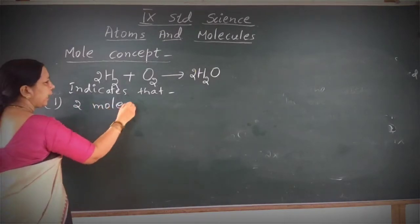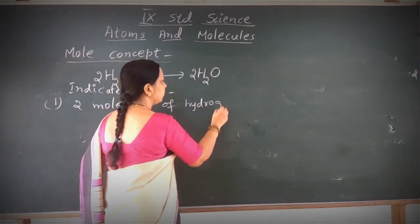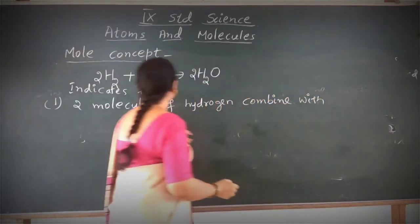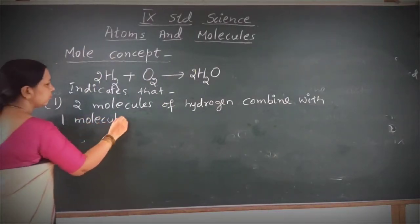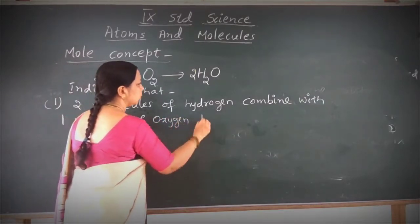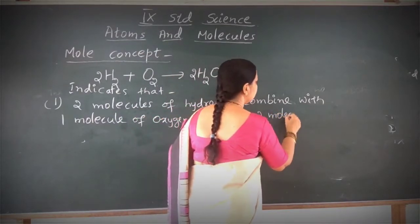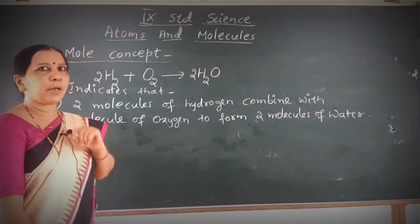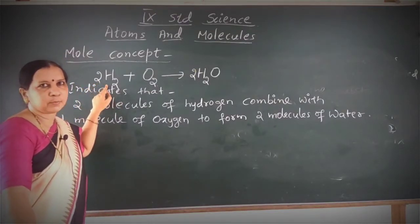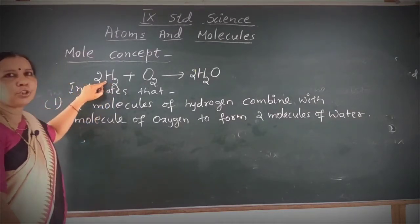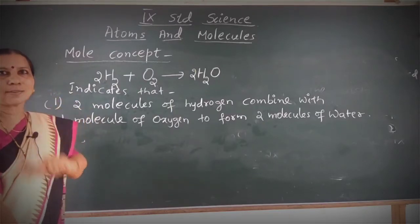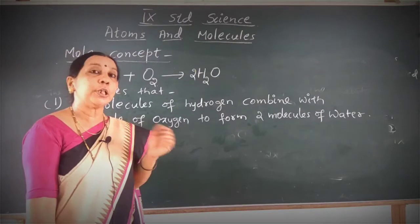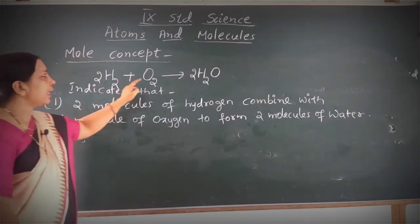Two molecules of hydrogen combined with one molecule of oxygen to form two molecules of water. This is hydrogen molecule. The atomic mass of hydrogen is 1. Here there are four atoms of hydrogen total, so the molecular mass contribution is 4 U of hydrogen. The molecular mass of oxygen O₂ is two into 16, which is 32 U.